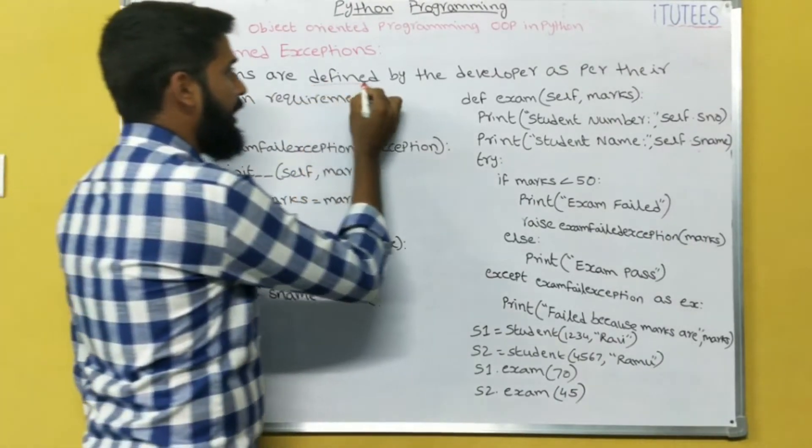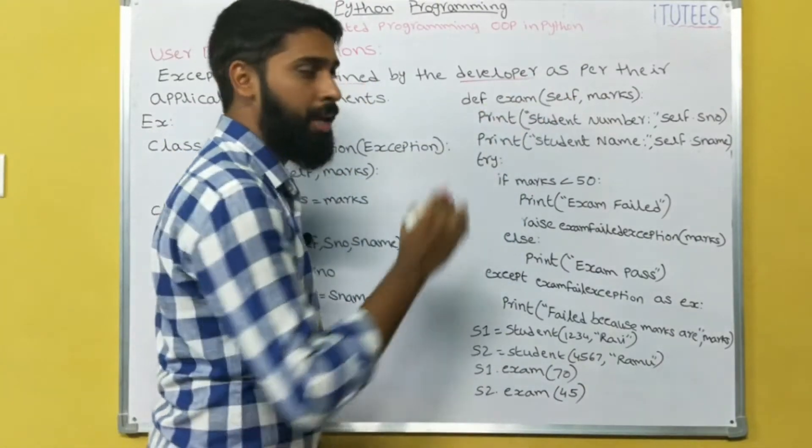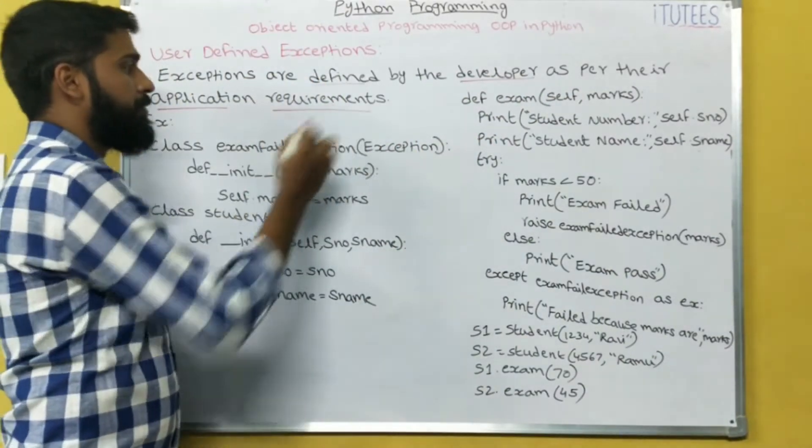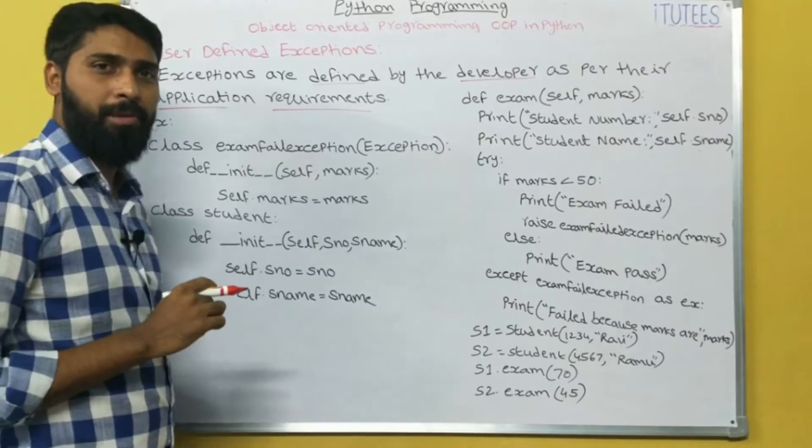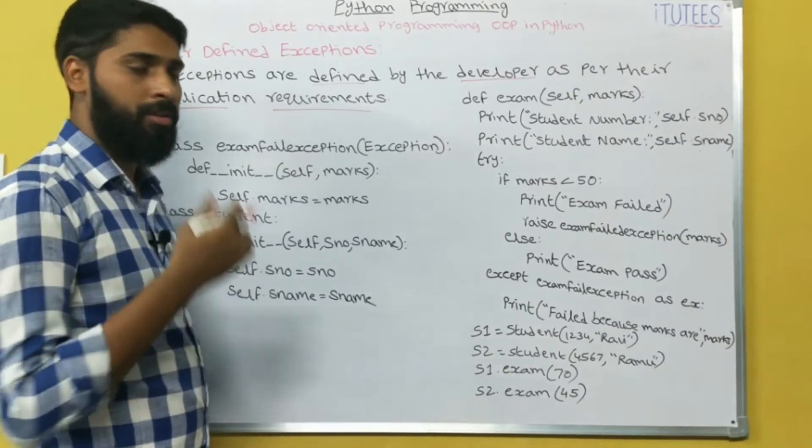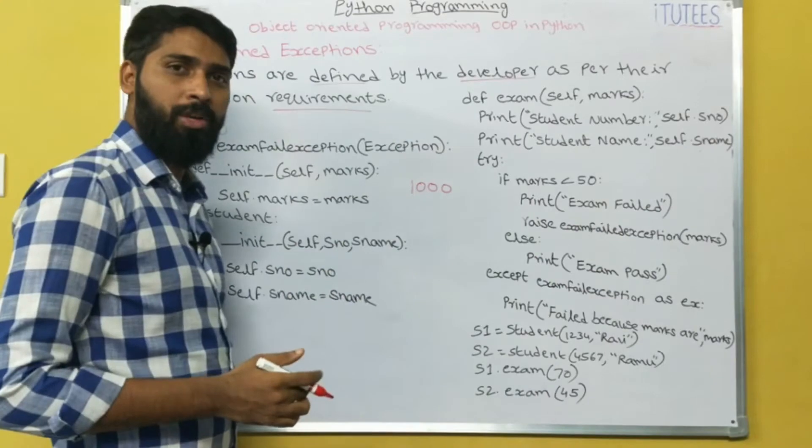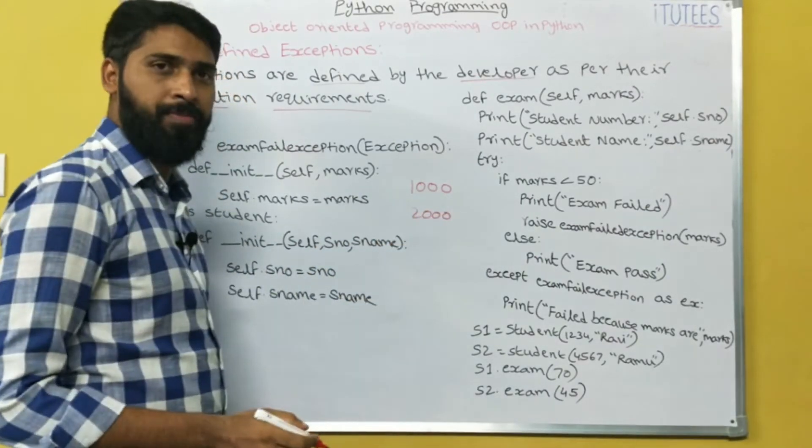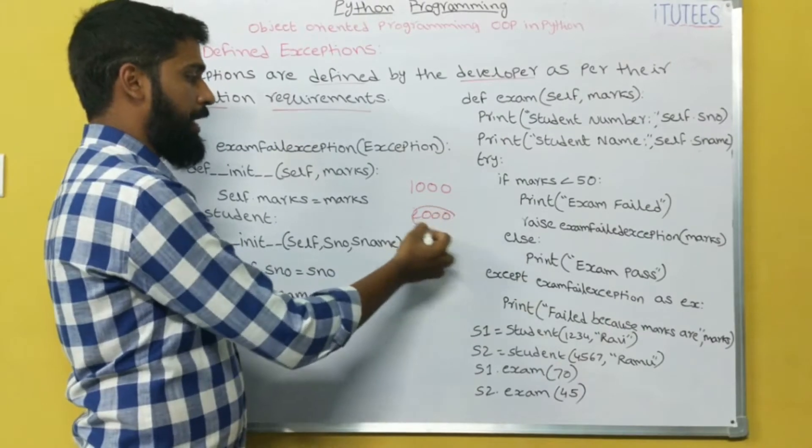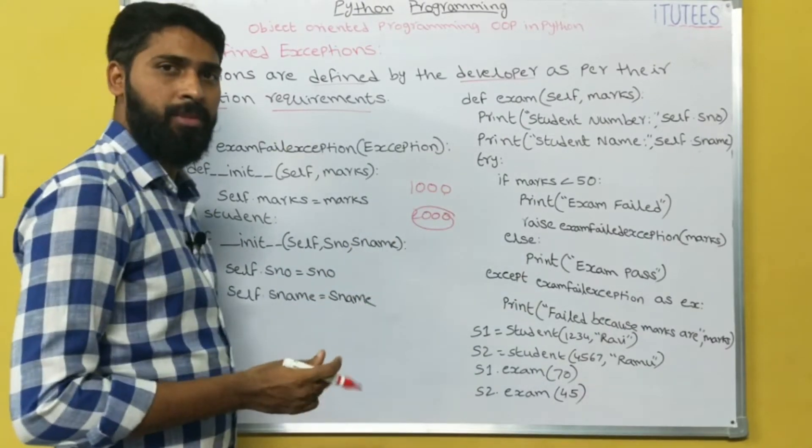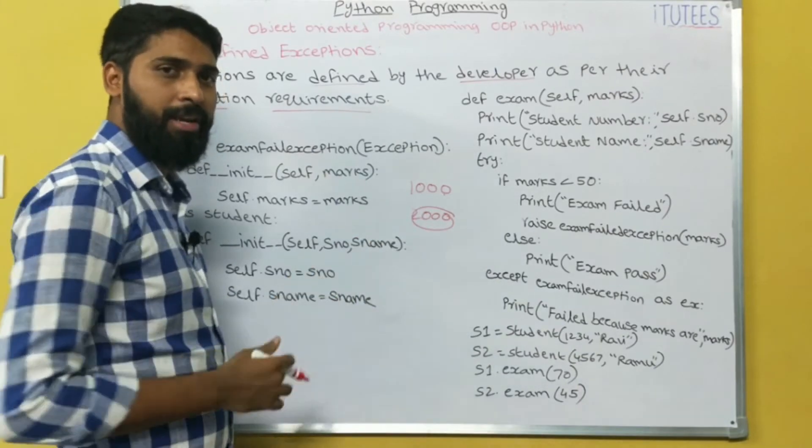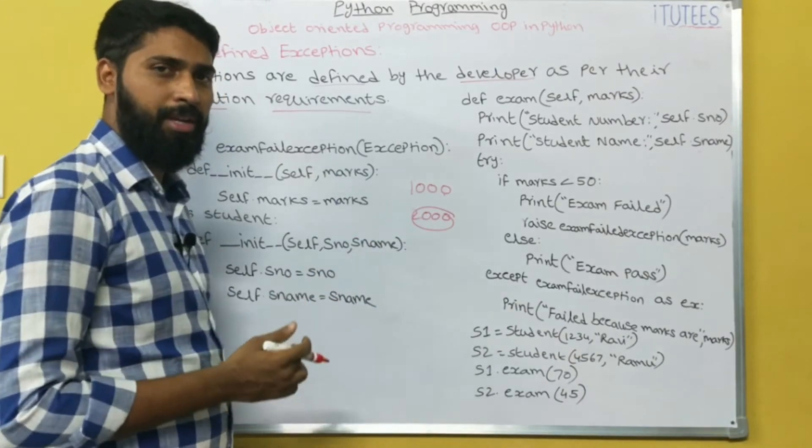Exceptions are defined by the developer as per the application requirements. For example, I want to withdraw money from my account. The amount in my account is 1000 rupees, but I want to withdraw 2000 rupees. That means this is greater than the amount. At that time we are going to treat this as an exception and we can write the program for user defined exception.